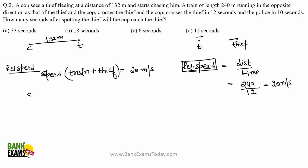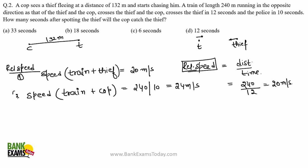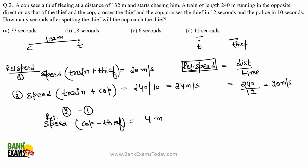Similarly, when the train crosses the cop, they are also moving in opposite directions. The train covers 240 meters in 10 seconds, so relative speed of train and cop = 240/10 = 24 meters per second. Calling these equation 1 and equation 2, subtracting equation 1 from equation 2: relative speed of cop minus thief = 4 meters per second. Since the distance between cop and thief is 132 meters and speed is 4 m/s, time taken = 132/4 = 33 seconds.